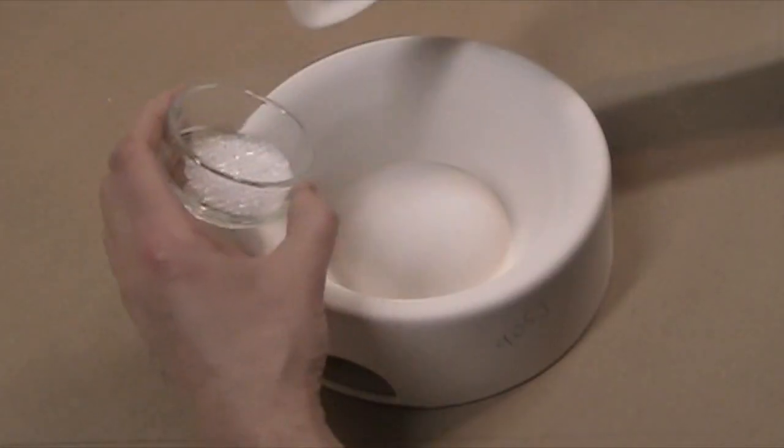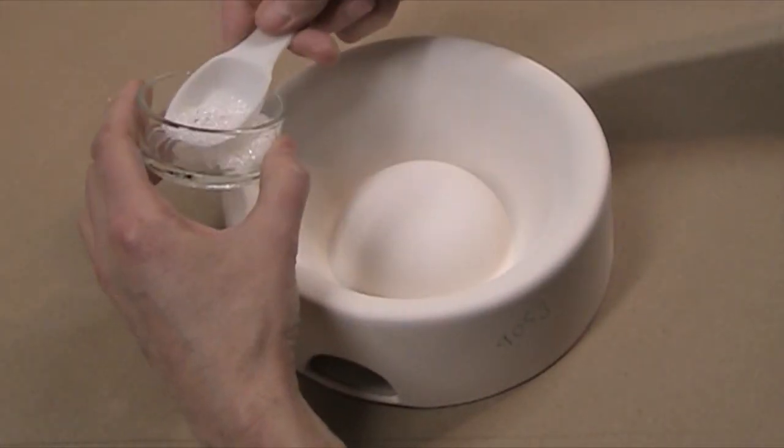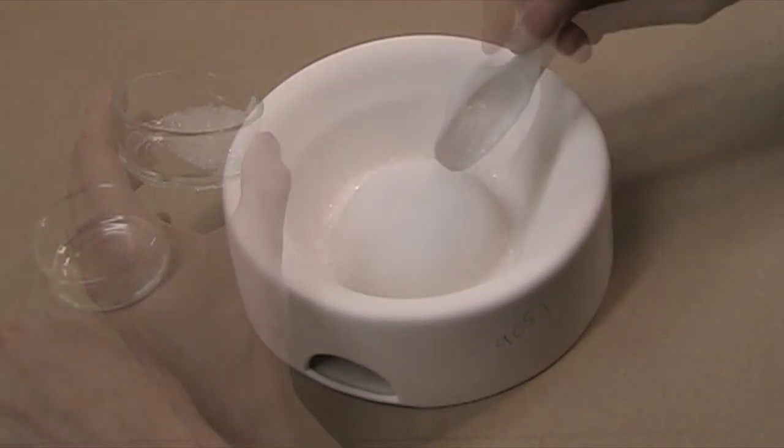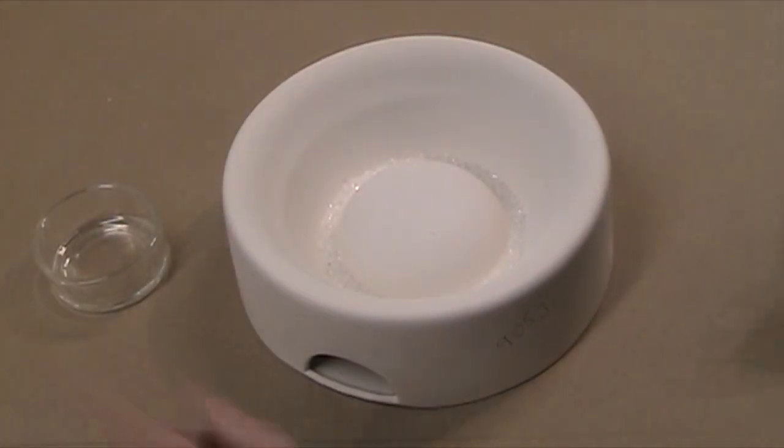Evenly distribute 10 to 15 grams of clear medium frit in the bottom of the mold. This will create a level foundation for the tiles.